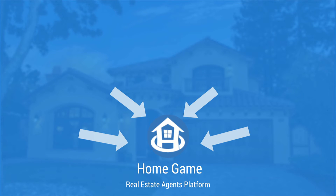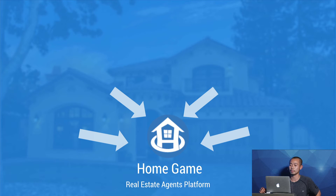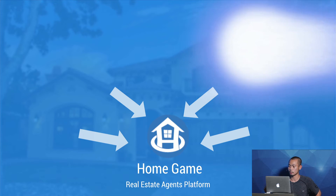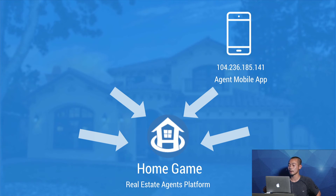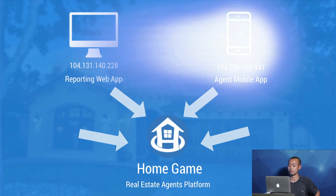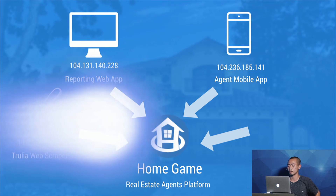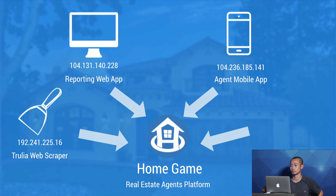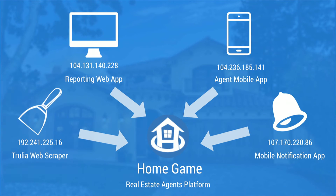Let's talk about Home Game. Home Game is a real estate agent platform including four different apps. It has a mobile app — you can check out the IP address. It also has a reporting web app, a Trulia web scraper — we scrape the Trulia database once a week so we already know exactly what houses are on the market. And the last one is a notification mobile app, so we push notifications to mobile users so they know when an open house is going to happen.